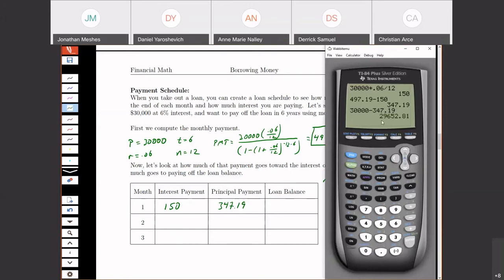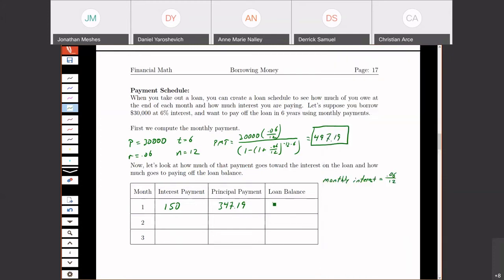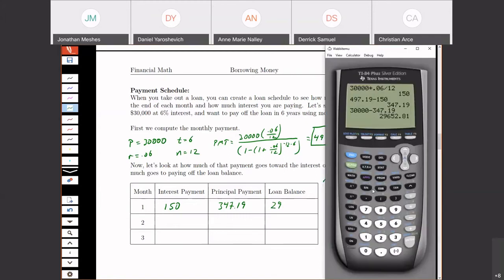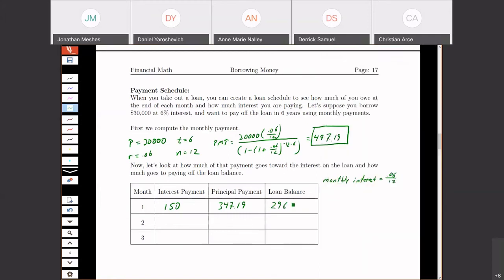So that means that my loan balance will go down by $347.19. So then I'll end up with $29,652.81. So this one was $497.19 minus $150, and this one was $30,000 minus the $347.19.